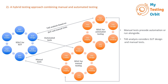In the hybrid approach, TAS analysis considers both SUT design and manual tests. Regarding SUT design, TAS analysis assesses how automated tests can effectively cover various aspects of the system — understanding the architecture, interfaces, and functionalities of the SUT to determine what is suitable for automation. Regarding manual tests, TAS analysis evaluates existing manual test procedures to determine how they can complement or transition into automated testing, and identifies which manual test cases can be automated and which should remain manual based on factors like complexity and frequency.